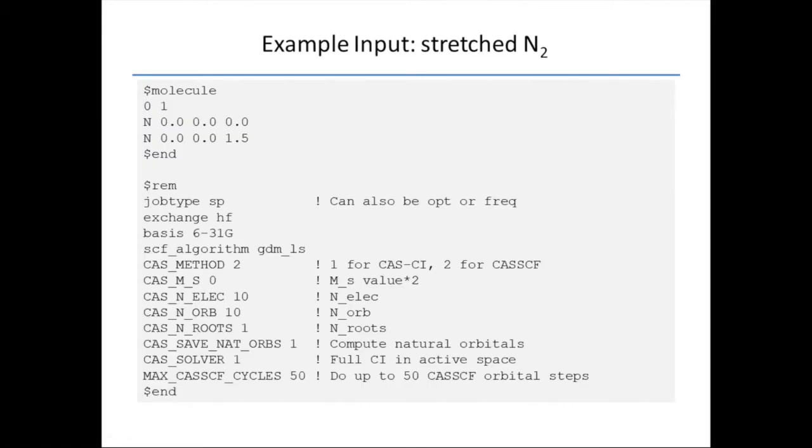Here's an example input for a stretched N2. This is a single point, but you can also do OPT or FREQ, or transition state searching is also possible because it's also a nuclear gradient. Right now we're doing CASSCF for a singlet with 10 electrons and 10 orbitals. We want only the bottom root. We're going to compute the natural orbitals, and we're doing full CI in the active space, and we'll take 50 CASSCF cycles.